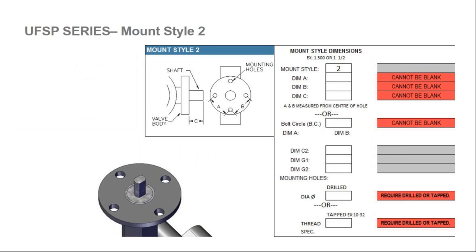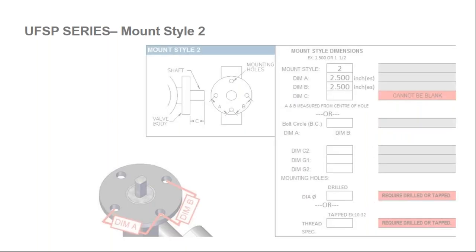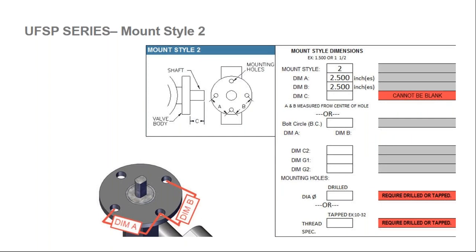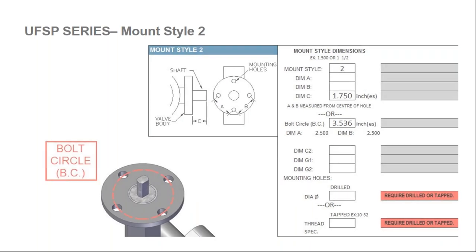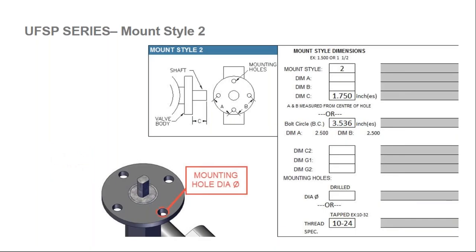Mount style two is similar to mount style one, except the mounting holes are in a diamond pattern rather than a square pattern. Dimension A and dimension B are from center of mounting hole to center of mounting hole. Dimension C is the overall height of the shaft. The bolt circle diameter can again be used instead of dimension A and B. The mounting hole diameter can be filled out as tapped, for example 10-24, showing one of several valid ways to specify it.